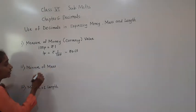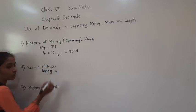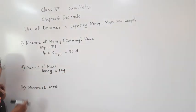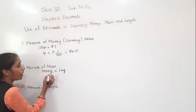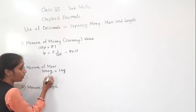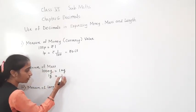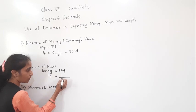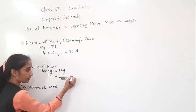Now measure of mass. 1000 grams is equal to 1 kilogram — this you already know. Now suppose 1 gram is equal to how much kilogram? For that we use the decimal point. We divide 1 by 1000 to get kilograms.